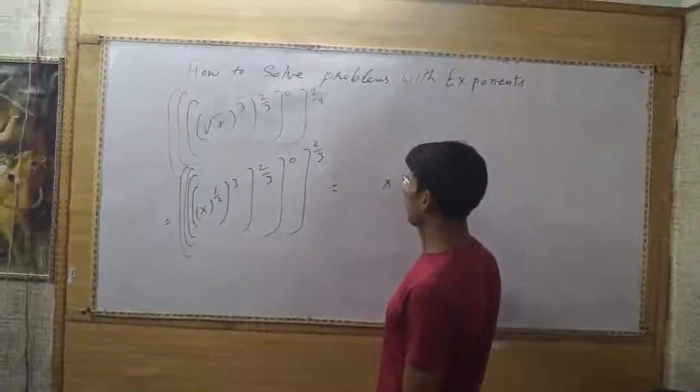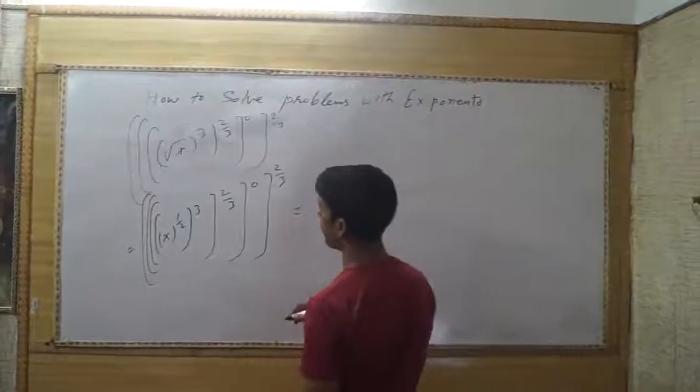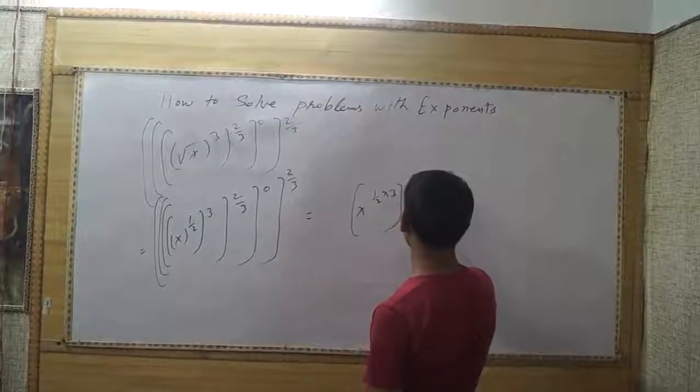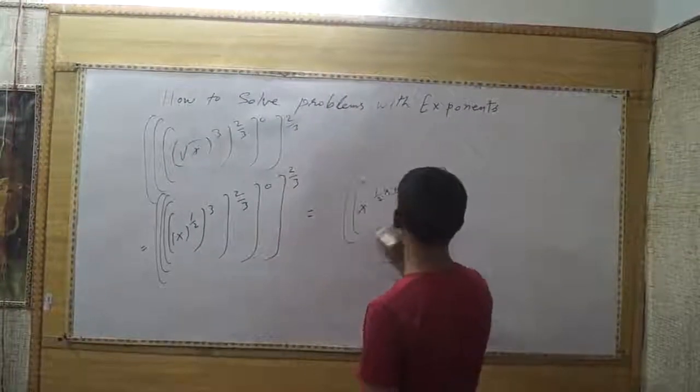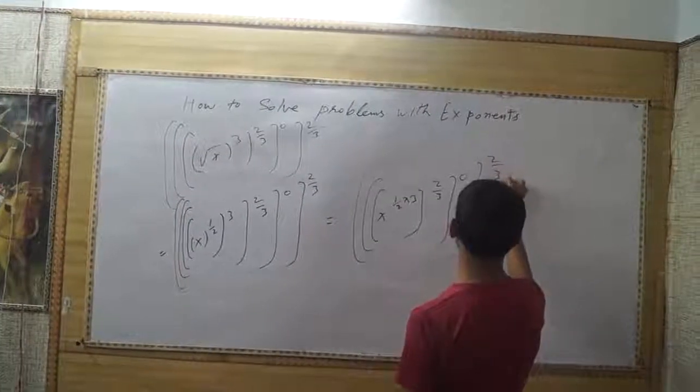x multiplies this 1 divided by 2 into 3. And this will be 2 divided by 3. And this will be 0. And this will be 2 divided by 3.